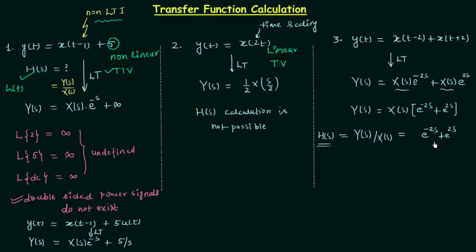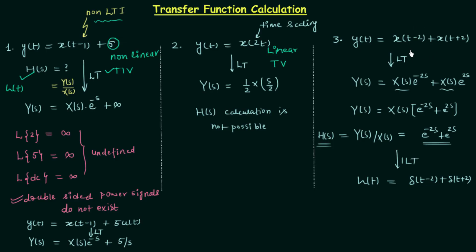Y(s)/X(s) is our transfer function, so H(s) = e^(−2s) + e^(2s). If you want to calculate the impulse response, simply take the inverse Laplace transform, and you will get h(t) = δ(t−2) + δ(t+2). In this case the system is LTI because it satisfies all the conditions for linearity and time invariance.